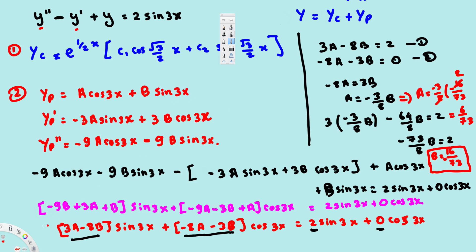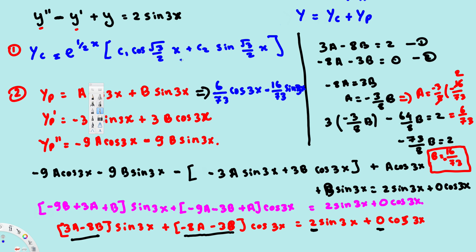Now we can write the particular solution: yp = (6/73) cos 3x − (16/73) sin 3x. The general solution is the complementary solution plus the particular solution: y = e^(x/2)[c1 cos(√3/2 · x) + c2 sin(√3/2 · x)] + (6/73) cos 3x − (16/73) sin 3x. That's how we solve this type of differential equation. Thanks for watching.